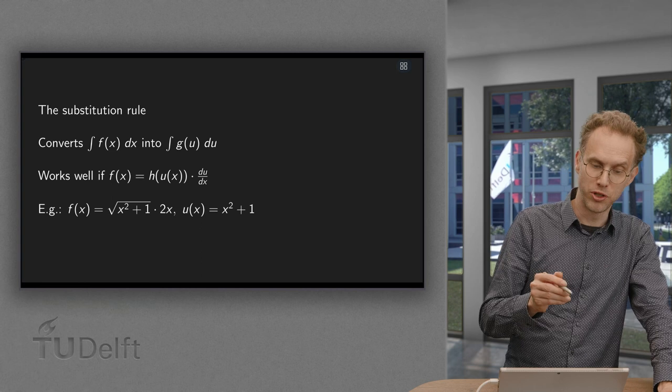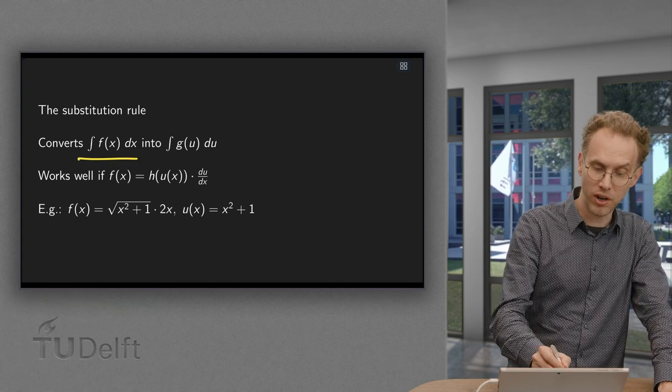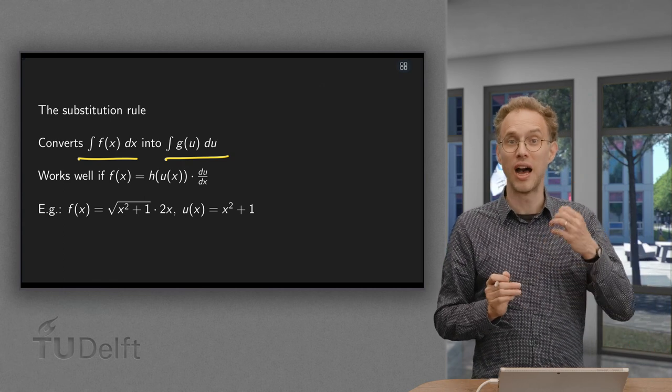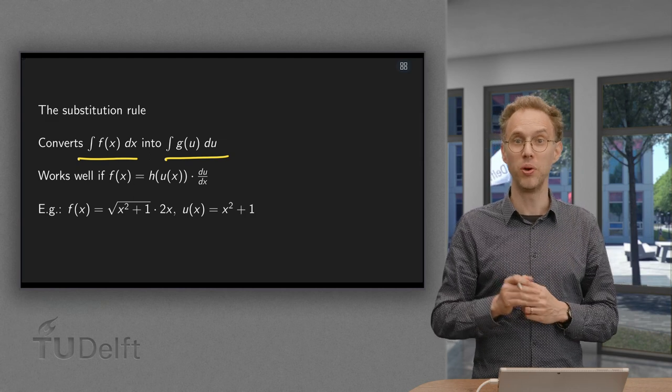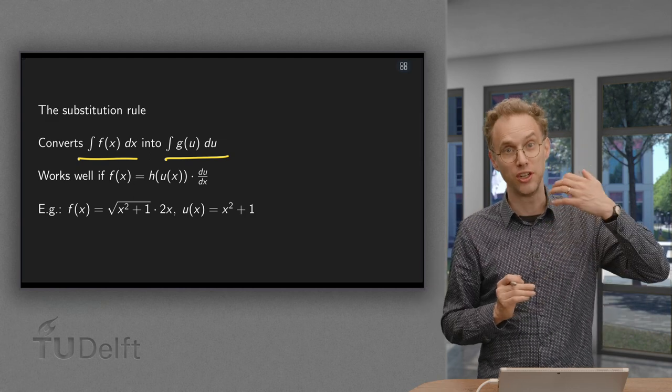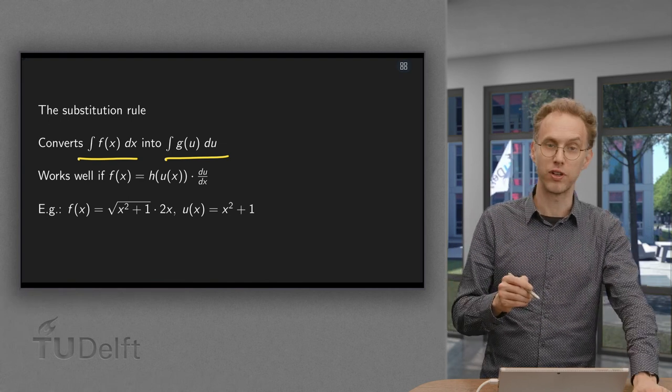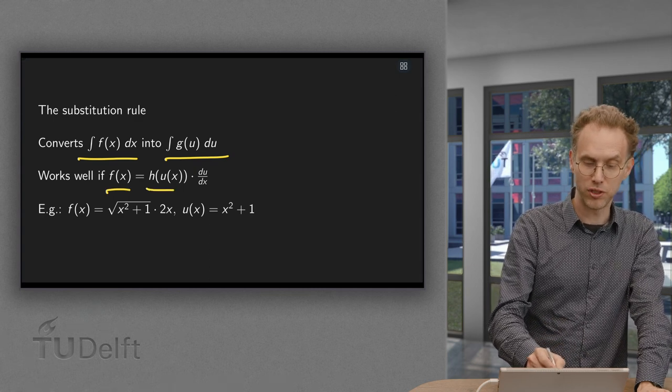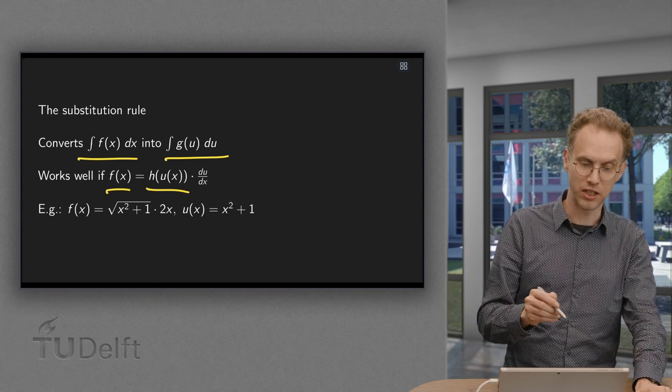So what does it do? The substitution rule converts one integral into another integral, so it does not give you directly the answer. However, the idea is that after the substitution rule the second integral is easier than the first one. So when does this work well? It works particularly well if your f(x) is of the following form: some function of u(x) times u'(x). So let's see an example.